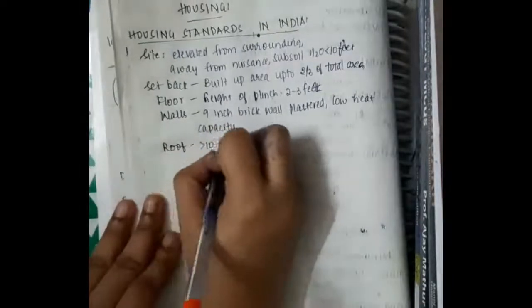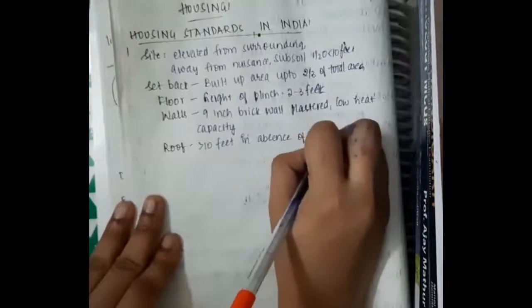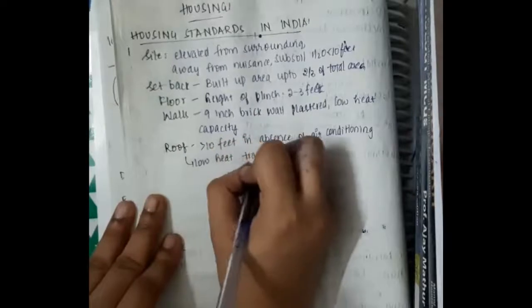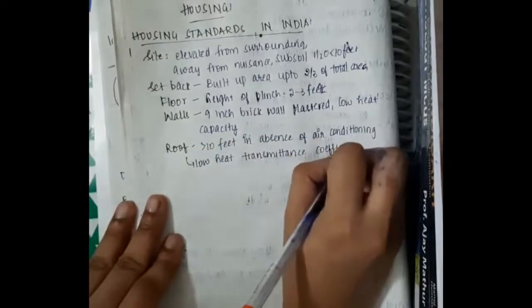Roof should be more than 10 feet in absence of air conditioning. Low heat transmittance coefficient is necessary for the roof.